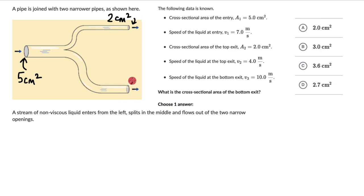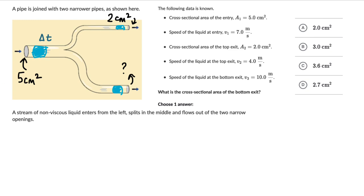We don't know the area of the bottom exit — that's what we need to figure out. The key idea is that the volume of water entering equals the volume exiting from both pipes. Some water goes from the top exit and some from the bottom. In a time interval delta T, the volume entering V1 equals V2 plus V3 — the volumes exiting from the top and bottom.